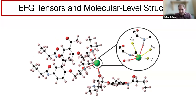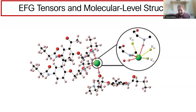One nucleus we're very interested in is chlorine-35, because it is an extremely sensitive gauge of local structure and occurs in a very large number of pharmaceuticals—approximately half of oral dosage forms contain chloride ions. Chloride ions interact by hydrogen bonds with nearby organic moieties, and the distribution of hydrogen-bond-donating groups, their distances, and spatial arrangement greatly influence the NMR patterns, enabling fingerprinting of different solid forms and even structure prediction in some cases.